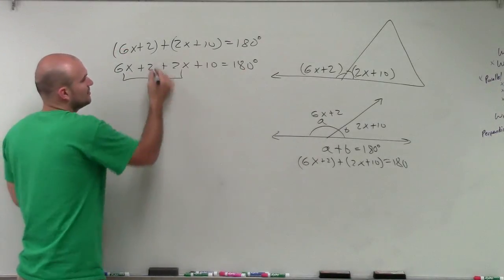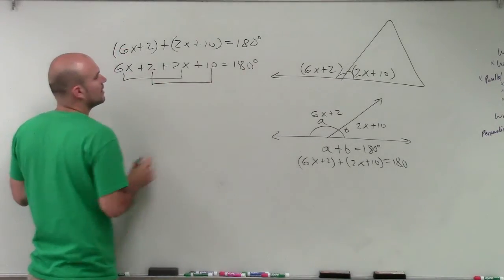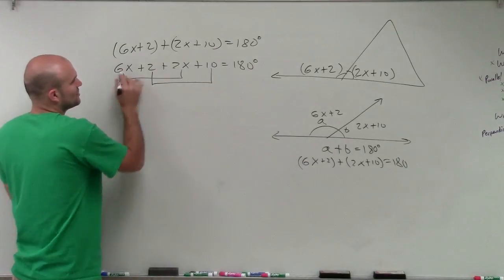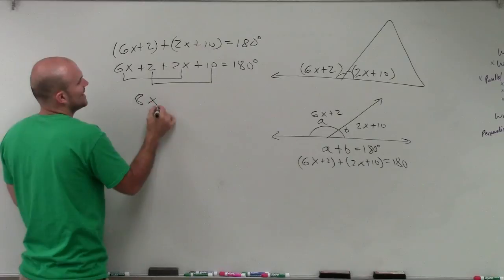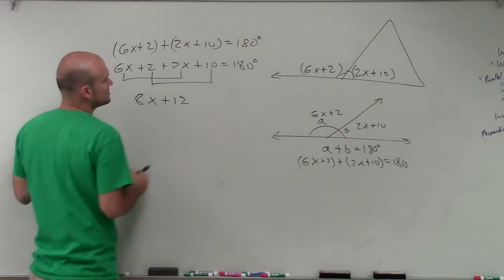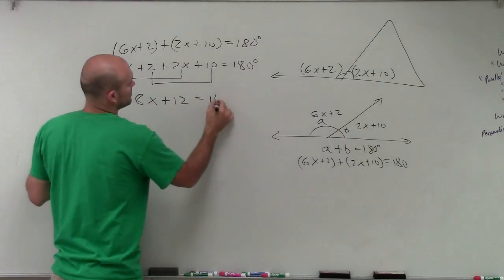So 6x plus 2 plus 2x plus 10 equals 180 degrees. Well, I can combine like terms with variables and with my integers. So therefore, 6x plus 2x is going to be 8x plus 12 equals 180.